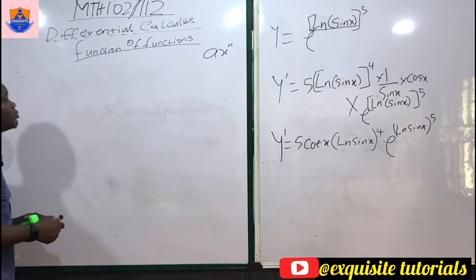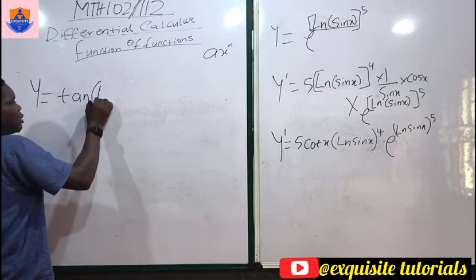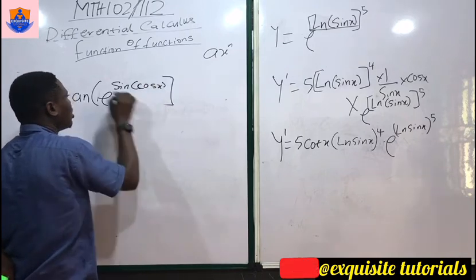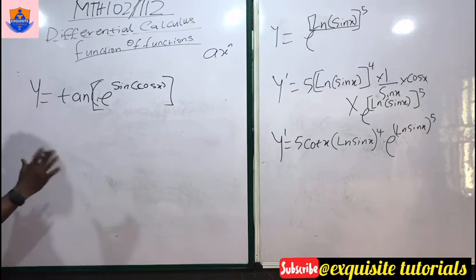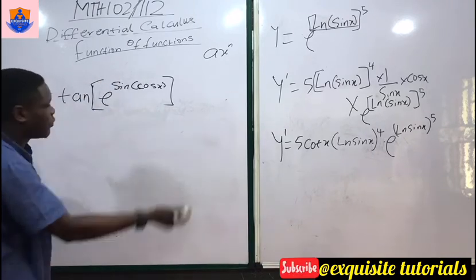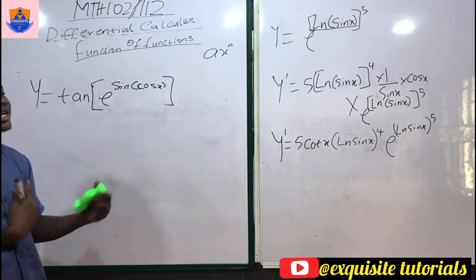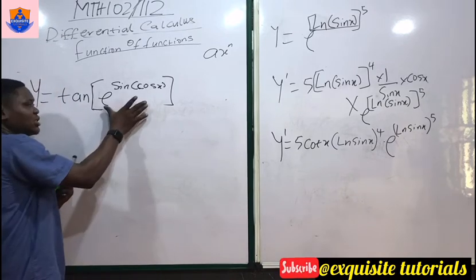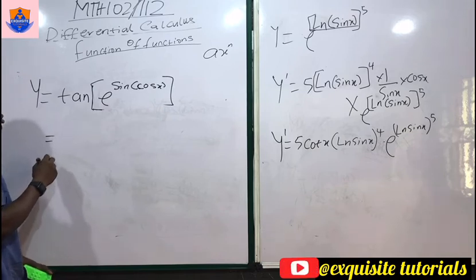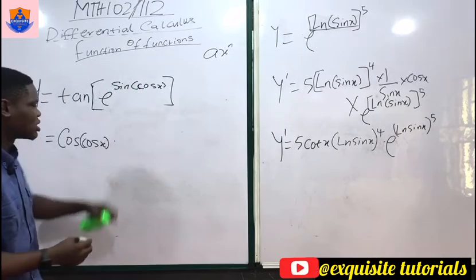Let's say y = tan(e^(sin(cos x))). The first function is tan, and what is inside is e^(sin(cos x)). To differentiate the inside: differentiate sin(cos x) first — when you differentiate sin you get cos, so cos(cos x), then differentiate cos x to get −sin x, giving cos(cos x) · (−sin x).